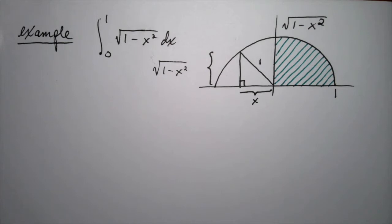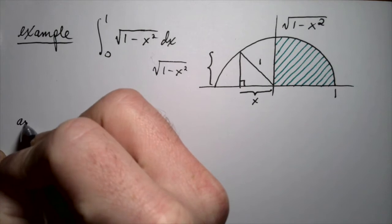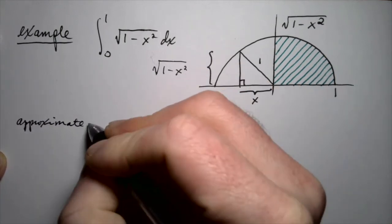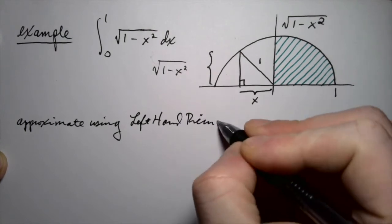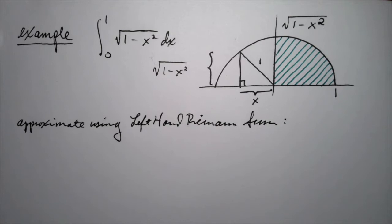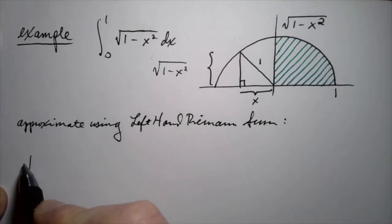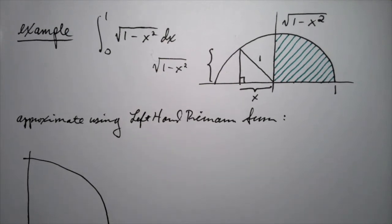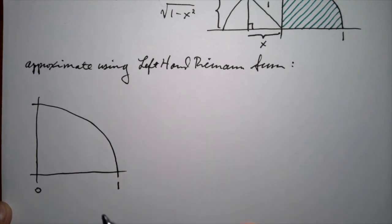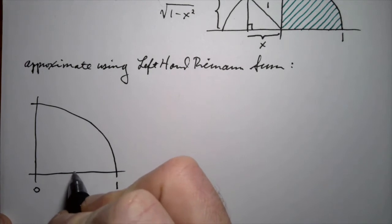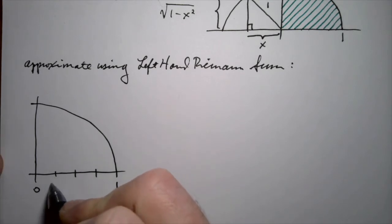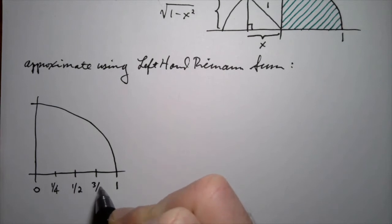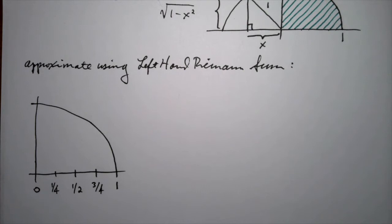We're going to approximate using left and right-hand Riemann sums. Let's first use a left-hand Riemann sum. I'll zoom in on the graph from 0 to 1, and then subdivide that interval into a bunch of different subintervals. Let's use 4 this time, so we're going to approximate using 4 boxes. The subdivision points will be 1/4, 1/2, 3/4, and 1, giving us 4 different little intervals to use for our boxes.